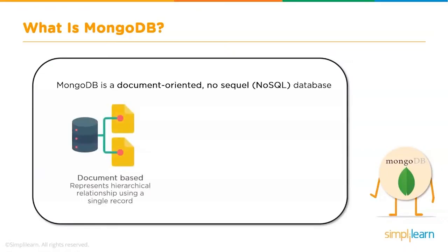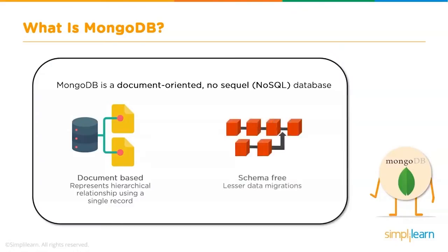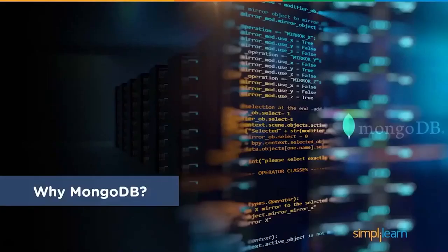MongoDB replaces the concept of rows of conventional relational data models with something called documents, offering developers the flexibility to work with evolving data models. Since it's document-based, MongoDB allows embedded documents and arrays, representing complex hierarchical relationships using a single record. It is also schema-free, meaning the keys defined in a document are not fixed, so massive data migrations can be ruled out. But you must be wondering — when there's something like SQL, why is NoSQL or MongoDB used?